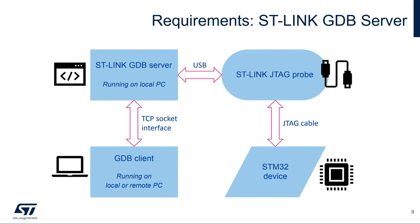Now let's talk about the requirements for getting your application ready to debug. Dual-core debugging allows simultaneous debugging of both cores using a single hardware debug probe, and that's where the ST-Link GDB server comes in. ST-Link server is an application to share the debug interface of a single ST-Link board among several host applications, like our debugging tool or a monitoring tool. The host application must have the ability to connect to the ST-Link server instead of connecting directly to the ST-Link USB interface. This figure shows how the GDB client connects to the ST-Link GDB server via TCP socket interface in order to debug the ARM Cortex-M target connected to the ST-Link JTAG.